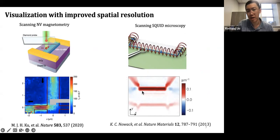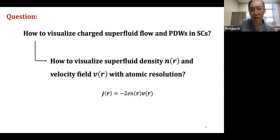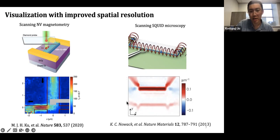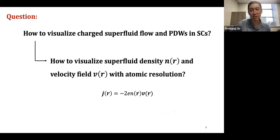The question is how do we visualize them down to a very small scale, because the pair density waves happen at the same wave vector as the charge density waves, which is on the order of several lattice constants. Even though there are scanning probe techniques, their spatial resolutions are limited to hundreds of nanometers at best. So how do we really visualize the superfluid flow and the pair density wave states down to the atomic level? This boils down to: how do we visualize the superfluid density and the velocity field with atomic resolution? In that case, we can simply calculate the superfluid current J.